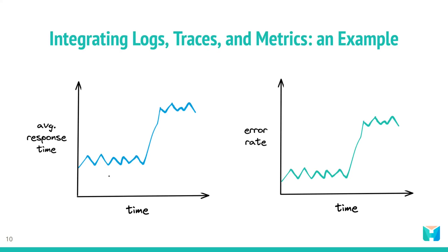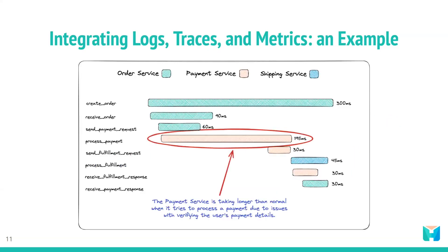Suppose a developer is responsible for a web application that allows users to purchase items online. Upon checking some metrics related to the performance of the app, the developer notices that the average response time and error rate for the app's checkout page have increased. They decide to investigate further. Based on these metrics, the developer uses tracing to follow a request through the system and pinpoint where a potential error may be occurring. The tracing tool shows that the request spent a significant amount of time in a particular service responsible for verifying the user's payment details.